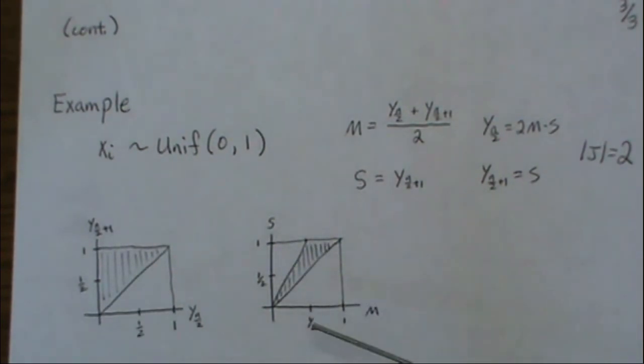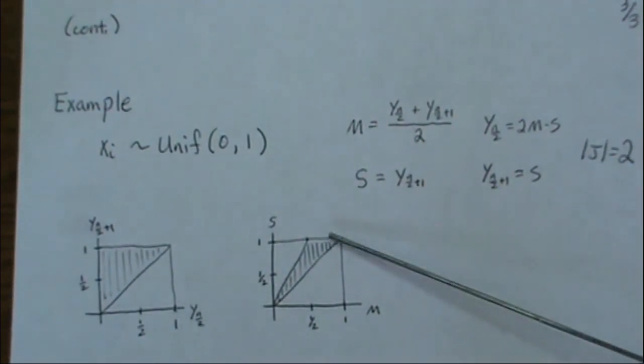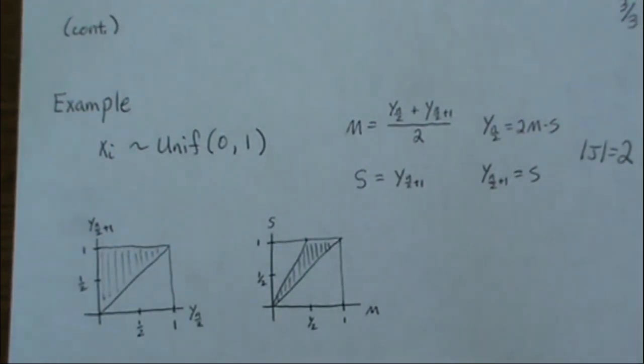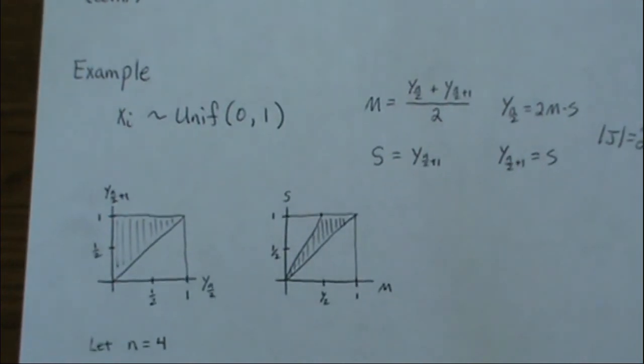So let's assume n equals four. And we're below one half.